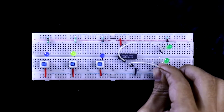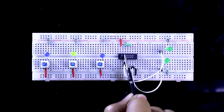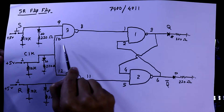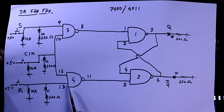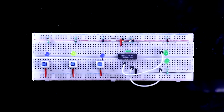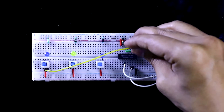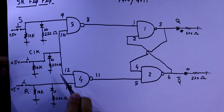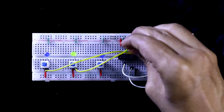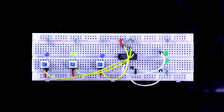Pins 10 and 12 are connected together. Pins 9, 10 or 12, and 13 are the inputs. Pin 9 is connected to S, pin 10 or 12 is used as the clock pin so the middle switch is connected to pin 10, and pin 13 is connected to R. So the inputs are connected.